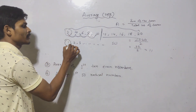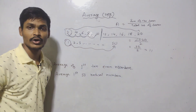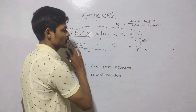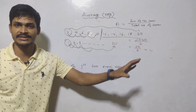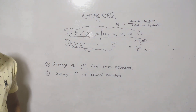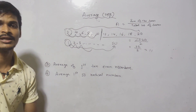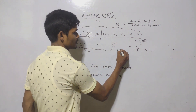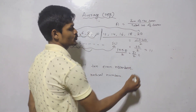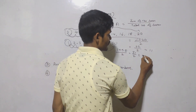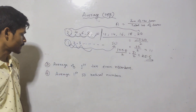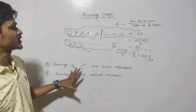This is the same formula we use for any consecutive sequence. For example, the first 50 natural numbers: 1 to 50. The numbers have the same gap — consecutive natural numbers — so we apply the same formula: first number plus last number divided by 2. That is 1 plus 50 divided by 2, which equals 51 divided by 2, giving 25.5. So the correct answer is 25.5.